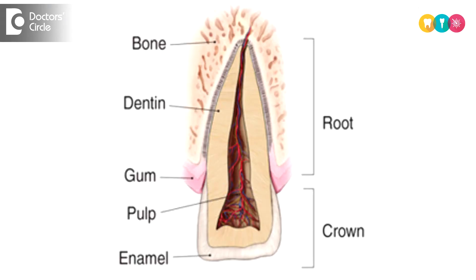Pulp is the living part of the tooth that comprises the blood vessels and the nerves. It is responsible for all the sensations that the tooth can feel. Pulp acts as a security alarm system for the tooth. Whenever there is any infection towards the pulp, the pulp responds itself to the hot and cold.